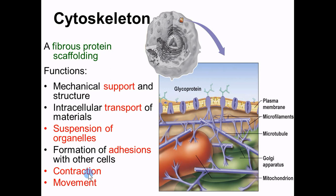The cytoskeleton also enables contraction and movement. In a muscle cell, you have a large abundance of microfilaments and intermediate filaments. The cool thing is that they move across each other — they contract. When a muscle contracts, it actually pulls these pieces of cytoskeleton together. We'll get into more detail when we get into the muscle section.